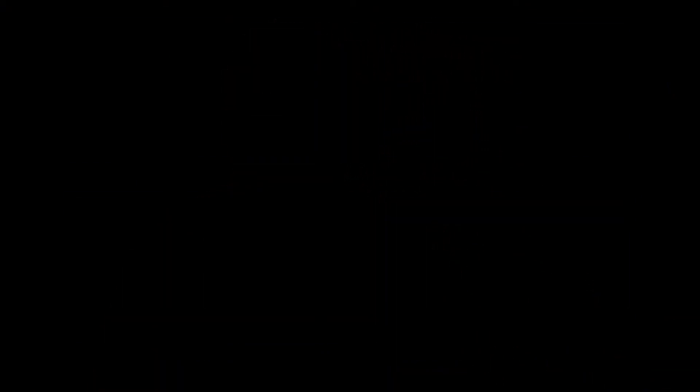The closing can smooth contours at the concavities. It'll fuse narrow breaks, so things that were supposed to be connected but had a little hole in them. And it can sort of fill in these gulfs. So often you'll do one followed by the other.